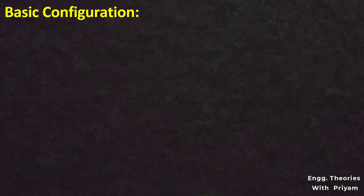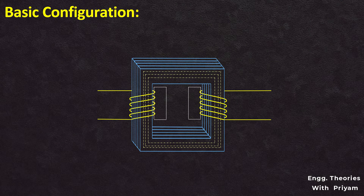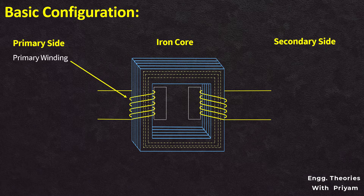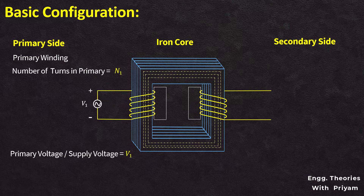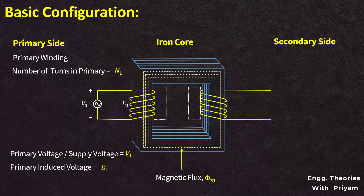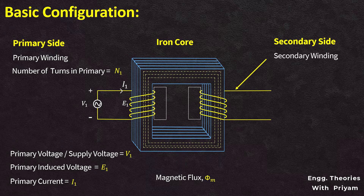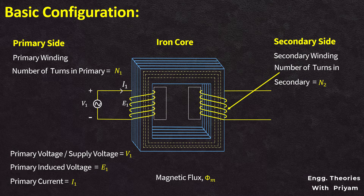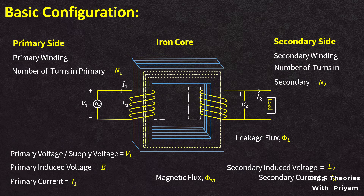The basic configuration of a transformer includes an iron core laminated with steel bands, a primary side and a secondary side. The primary side has a primary winding or coil with N1 number of turns. The supply or input voltage to the primary winding is V1, which generates a magnetic flux φm. The self-induced voltage in the primary is E1 and the current in the primary winding is I1. The secondary side has a secondary winding with N2 turns. The flux generated in the primary winding links to the secondary winding; flux not linked is known as leakage flux. The mutually induced voltage E2 is connected across the load, and the current in the secondary winding is I2.